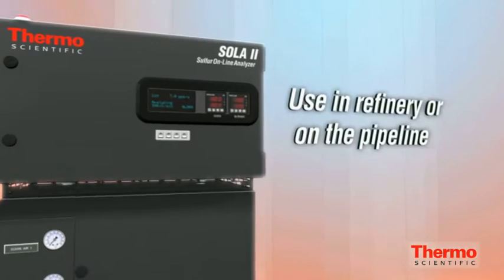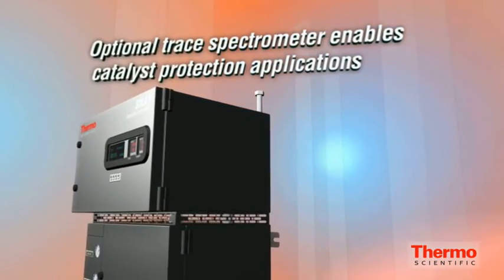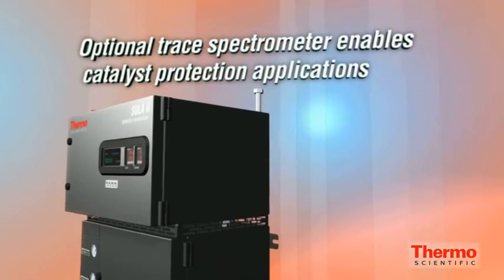Isomerization and reforming catalyst protection applications are enabled with the SOLA-2 trace, with detection limits as low as 25 parts per billion.